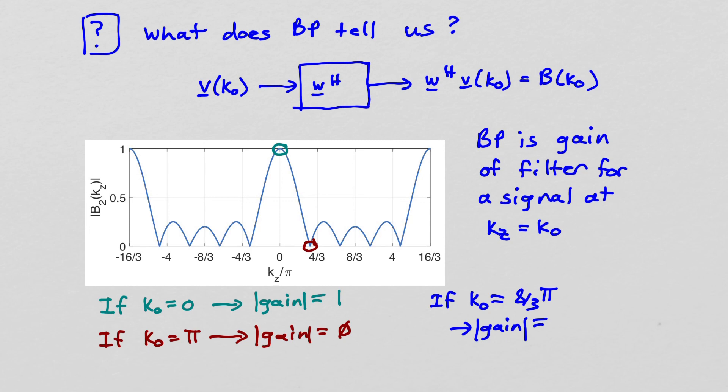Finally, let's look at one more case. If k0 is equal to 8 thirds pi, okay? So 8 thirds pi, well, that's about right here. And so in that case, we'd say, well, that gain reading off the graph, maybe it's 0.2 there. So that signal, it wouldn't be completely eliminated by the filter, but it's certainly going to be attenuated somewhat by the filter.